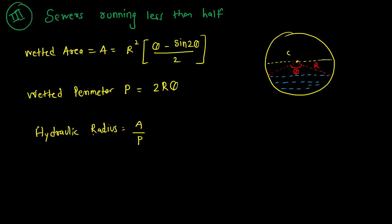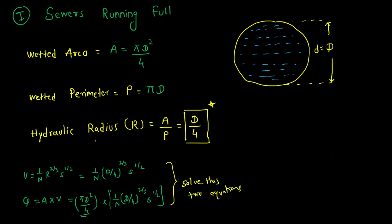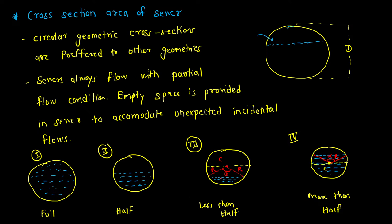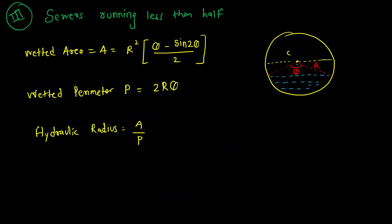In the previous video we discussed the design of sewers and saw four cases: full, half, less than half, and more than half. In the third case there is a slight mistake — the angle theta given is taken as half of the angle. To calculate the wetted perimeter, which equals r into theta, if the half angle is theta then the total angle is 2 theta, so the wetted perimeter is 2r theta. Rest everything is the same.